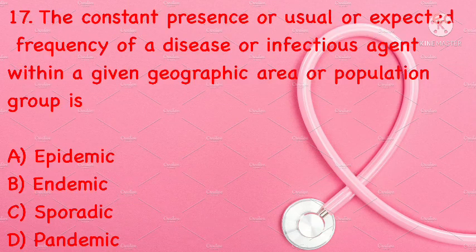The constant presence or usual expected frequency of a disease or infectious agent within a given geographic area or population group is: epidemic, endemic, sporadic, or pandemic. Correct answer is B: endemic.